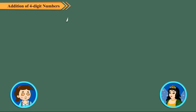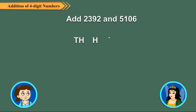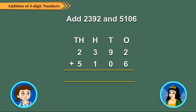Let us add 2392 and 5106. We add the ones, 2 plus 6 is equal to 8.